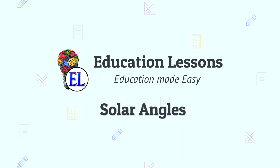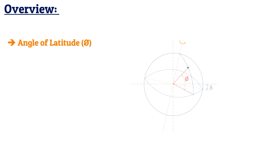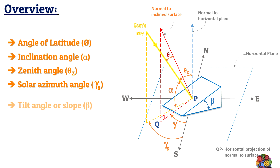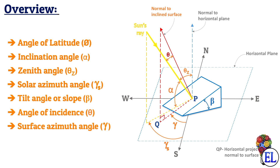Welcome back to another video of the animated video series from Education Lessons. In this video on solar angles, we will be learning about: first, angle of latitude; second, inclination angle; third, zenith angle; followed by solar azimuth angle, tilt angle of slope, angle of incidence, and lastly surface azimuth angle.